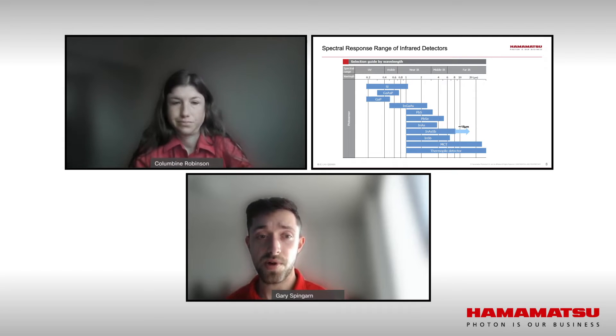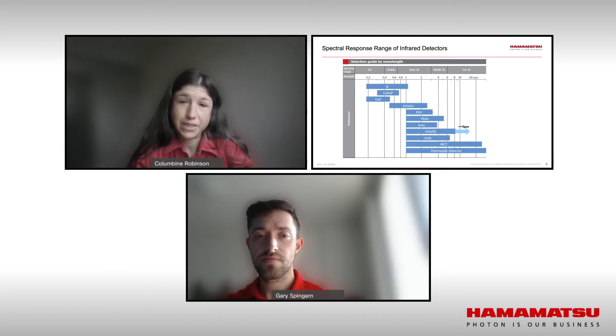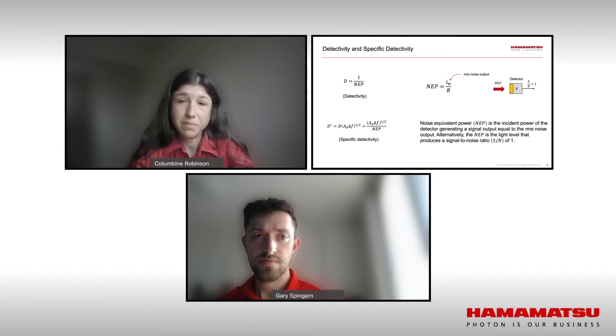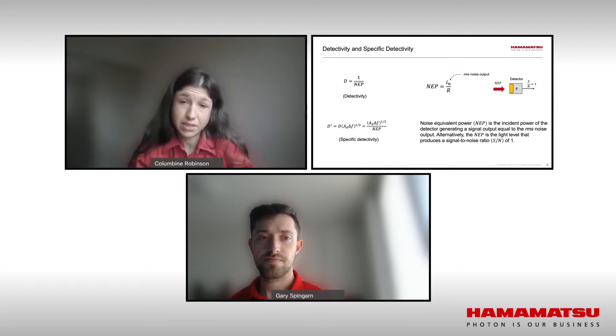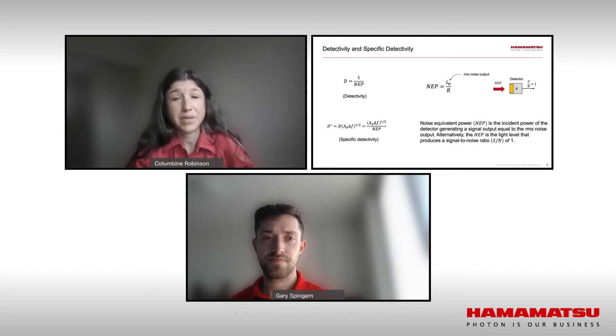Sure. So d-star, also known as detectivity, is a unit used to compare the sensitivity of different types of detectors as well as the same detector type with different active areas. It takes into account the active area, temperature or wavelength of the radiant source, the chopping frequency, and the bandwidth of the detector.